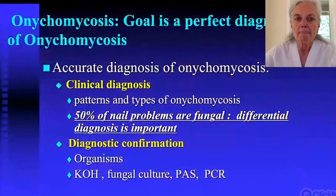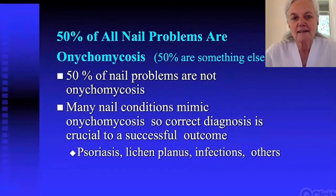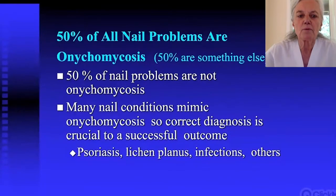Because 50 percent of nail problems that walk into a medical office are onychomycosis and 50 percent are something entirely different, it's critical to know that many conditions mimic onychomycosis. You really cannot rely on clinical appearance alone — you need laboratory confirmation. The most common mimics are psoriasis, lichen planus, other infections, congenital nail conditions, and nail changes associated with systemic disease.